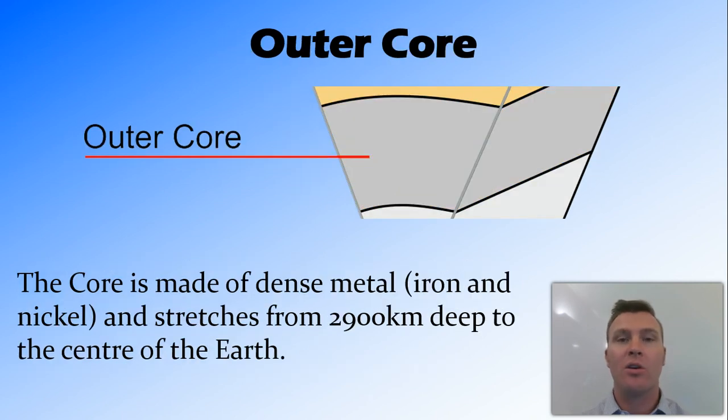We then move to the core. So the core is made of dense metal, and we believe this to be iron and nickel. And it stretches from 3,000 kilometers deep down, all the way to the center of the earth. So the core is a bit in the center.